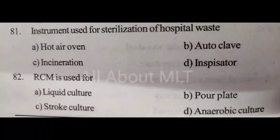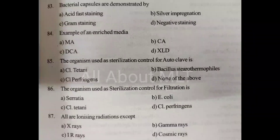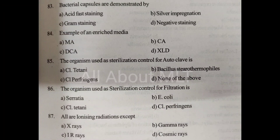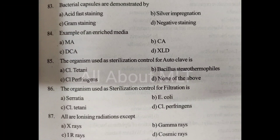Bacterial capsules are demonstrated by. Option A: Acid fast staining. Option B: Silver impregnation. Option C: Gram staining. Option D: Negative staining. Answer is Option D: Negative staining.